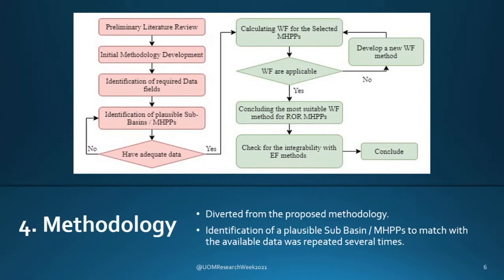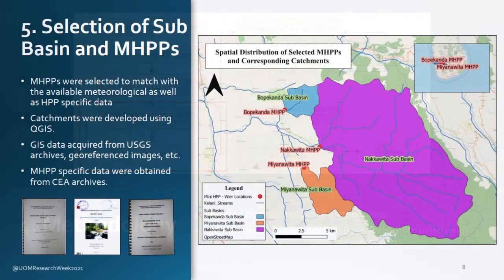Moving on to the methodology, this is a flowchart depicting the steps taken in carrying out the research. The steps followed in setting a definitive scope had to recur several times due to unavailability of data. The selection of sub-basin and mini hydropower plants was done based on the availability of meteorological data and mini hydropower plant specific data.